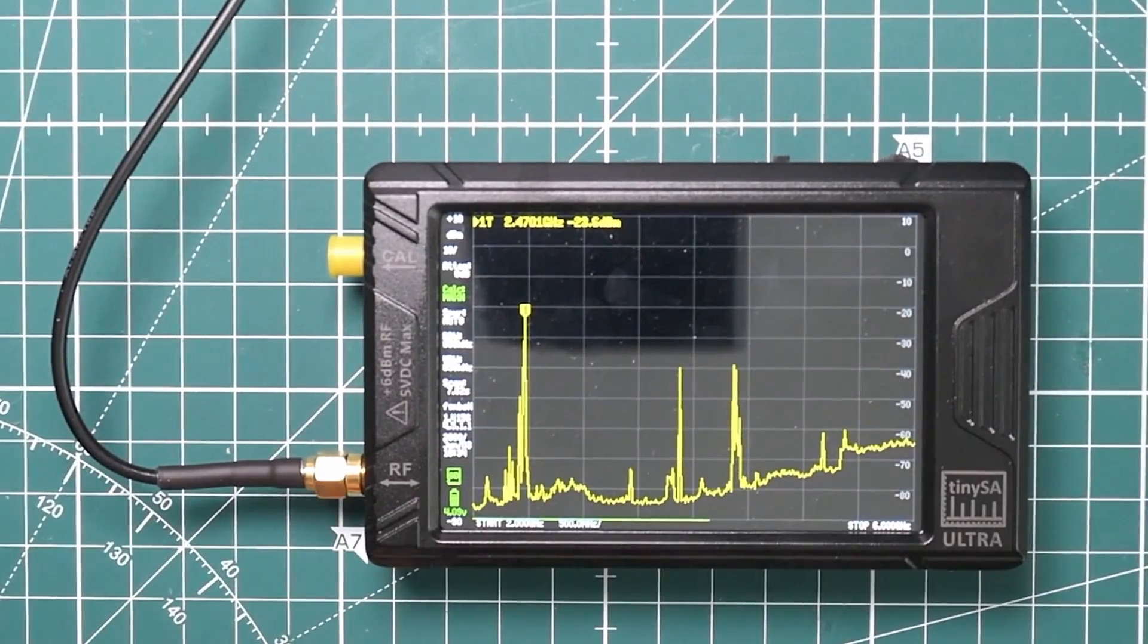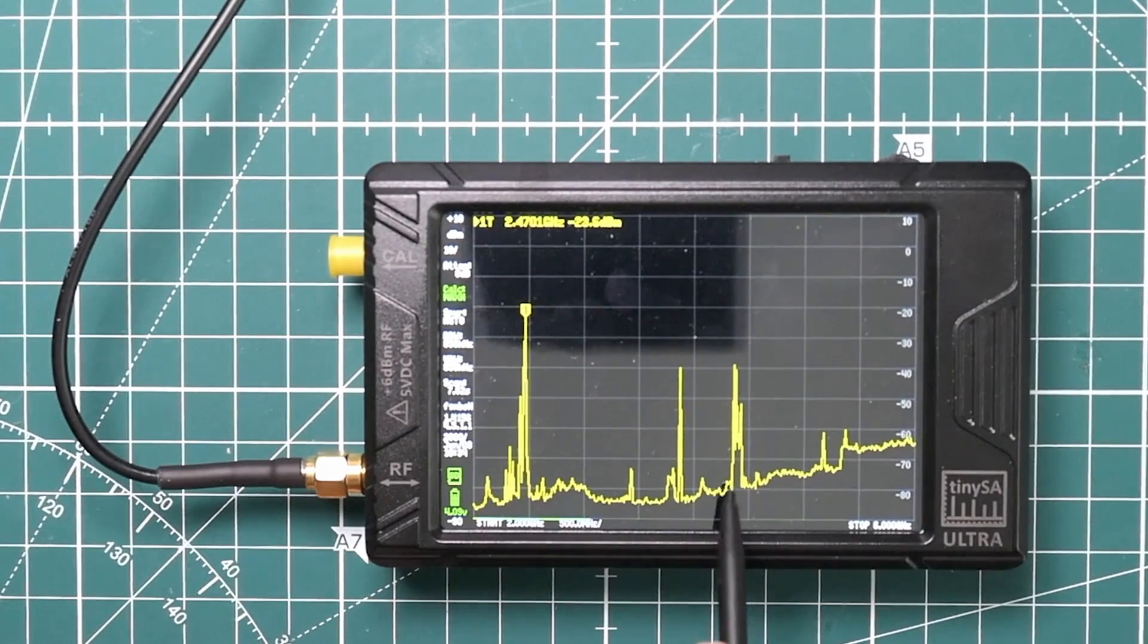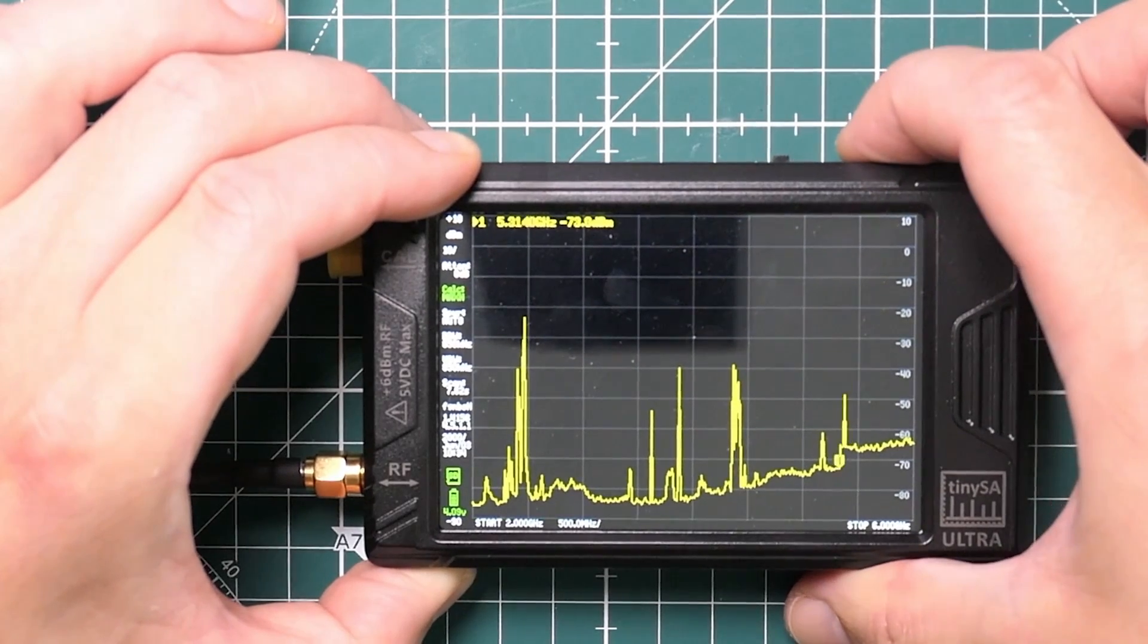I've got Bluetooth, Zigbee, all sorts of stuff in this house. So I'm not surprised to see so many spikes. I'm not really sure what these ones are, but the real test is going to be whether it actually improves anything.